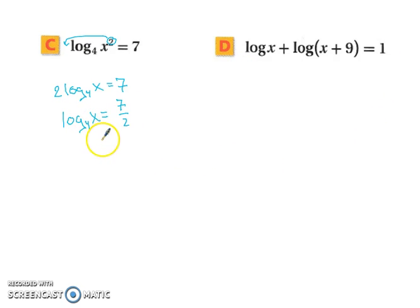So now that we've divided by 2 on both sides, this should look very familiar to one of the original problems that we were looking at maybe a few sections ago. So this is like saying 4 to the 7 halves equals x. Well, 4 to the 7 halves, we got 128.